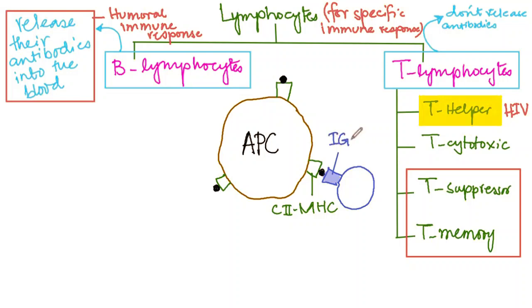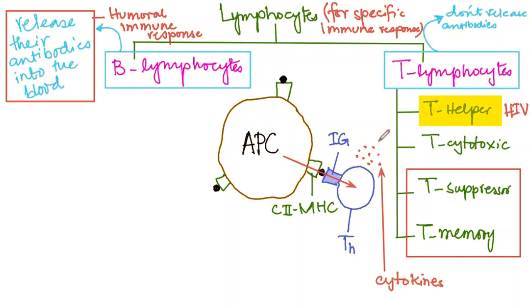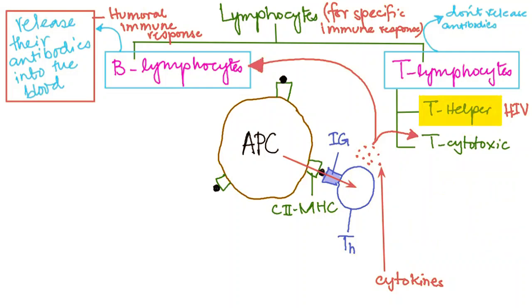Antibodies are also called immunoglobulins — they are globular proteins that provide immunity and are present on the outer surface of T helper cells. A chemical activator is then transferred from the antigen presenting cell into the T helper cell, which starts releasing a chemical signal called cytokines. These cytokines perform two important jobs: they trigger T cytotoxic cells and trigger B lymphocytes to begin clonal expansion.